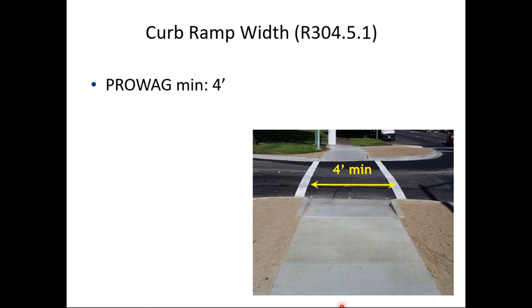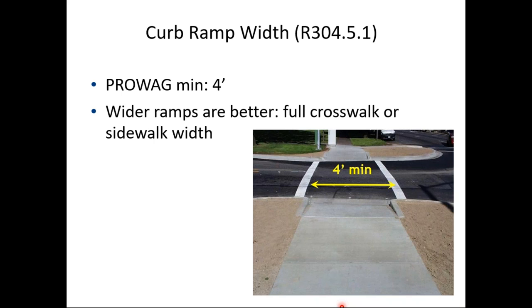Curb ramp width: ProAg minimum is four feet. The advice is wider is better — make the curb ramp the full width of the crosswalk or sidewalk. For example, a 10-foot paved multi-use trail crossing a street should have a 10-foot wide curb ramp, with the detectable warning strip spanning the entire width of the trail.